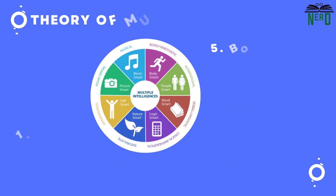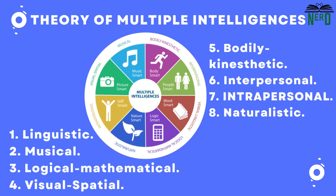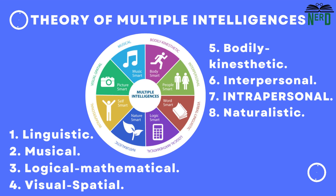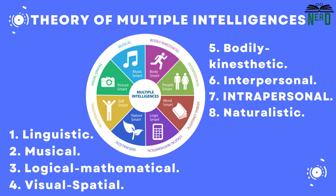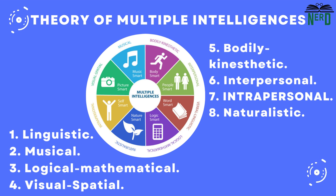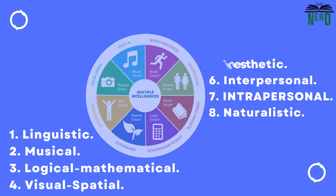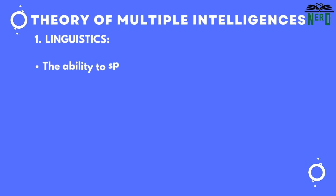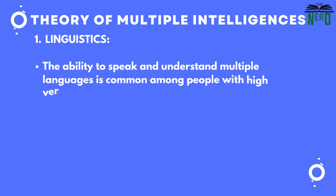Gardner's original theoretical model included seven separate bits of intelligence, with an eighth added in 1999. They are: 1. Linguistic, 2. Musical, 3. Logical-mathematical, 4. Visual-spatial, 5. Bodily kinesthetic, 6. Interpersonal, 7. Intrapersonal, 8. Naturalistic. Now let's discuss them one by one in detail.